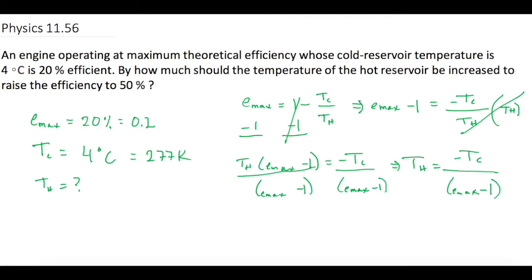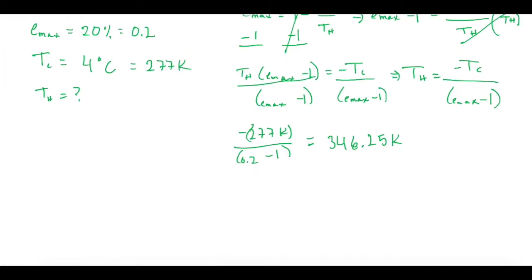Okay, so when we plug in the numbers, we get a negative 277 Kelvin divided by our Emax, which is 0.2 minus 1. So now if you notice, we'll get a negative over a negative and a positive value for Th. So when we plug in these, the calculator will spit out 346.25 Kelvin. And in case you're curious, that's around 73.25 Celsius. Okay, so now we know our initial Th is 346.25 Kelvin.